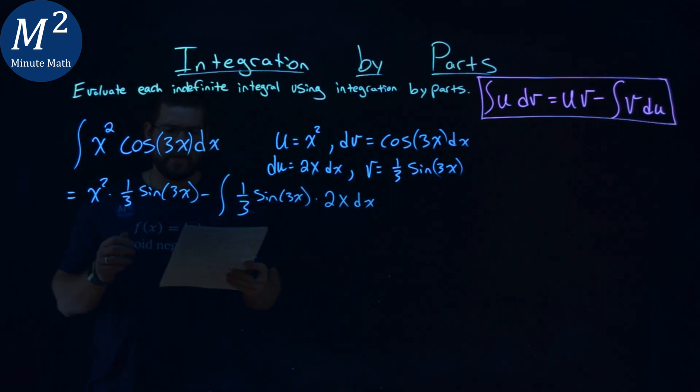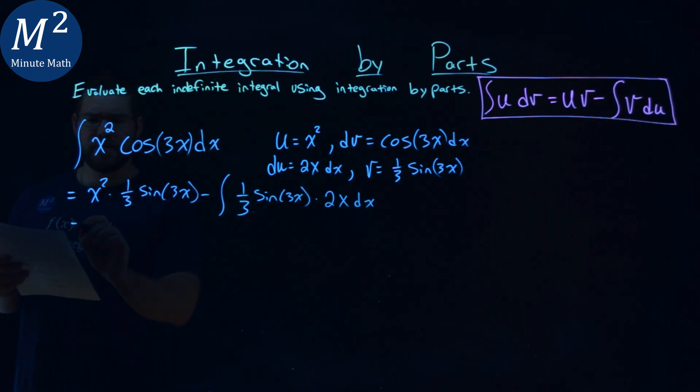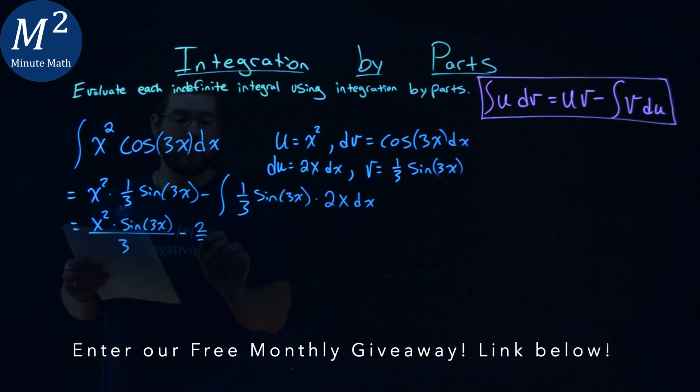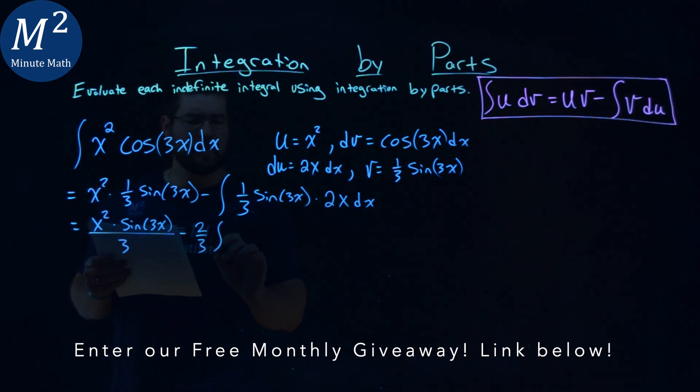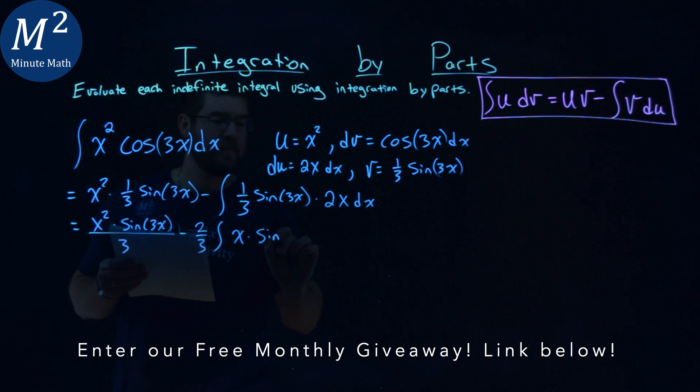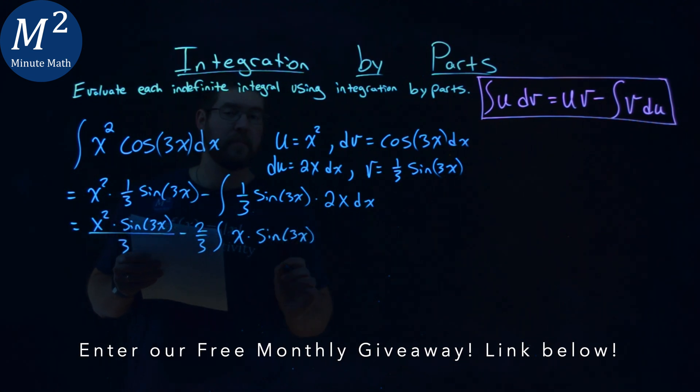Let's simplify this. We're going to combine this to be a fraction. We have x squared times the sine of 3x over 3, minus I'm going to pull out 2 thirds. The 2 here and the 1 third, so we have 2 thirds comes out. We're left with x times the sine of 3x dx.